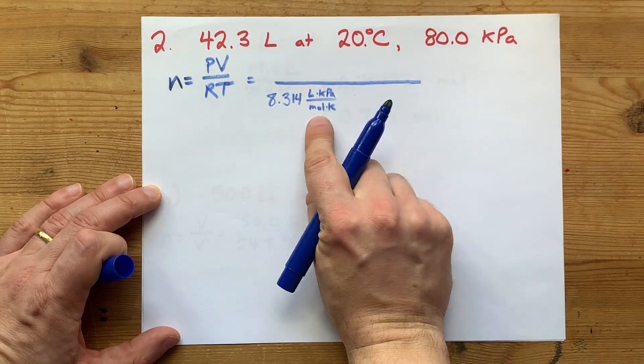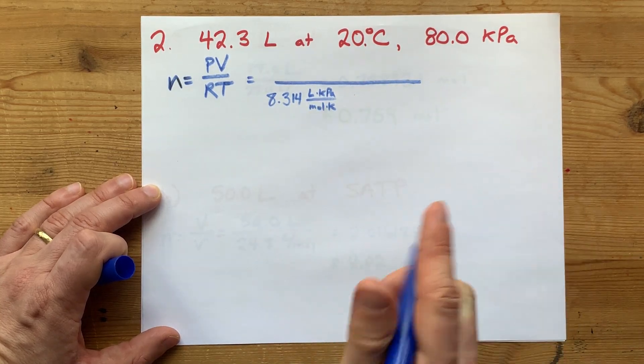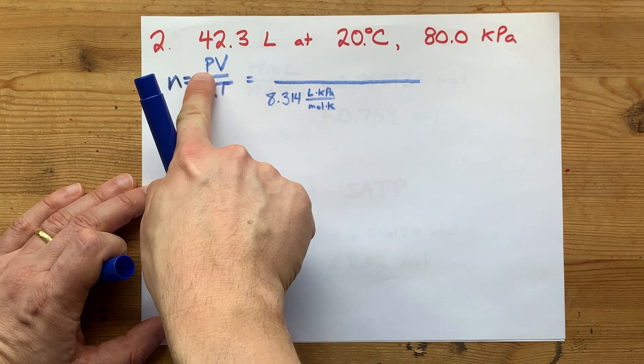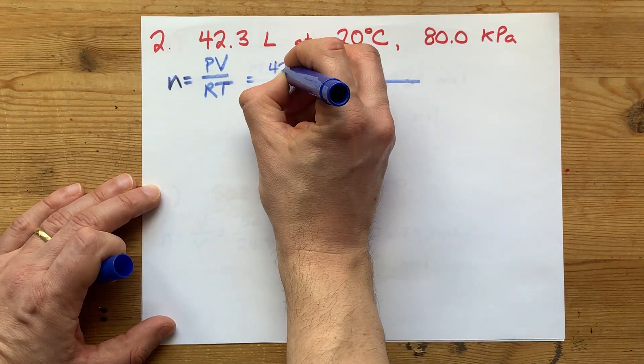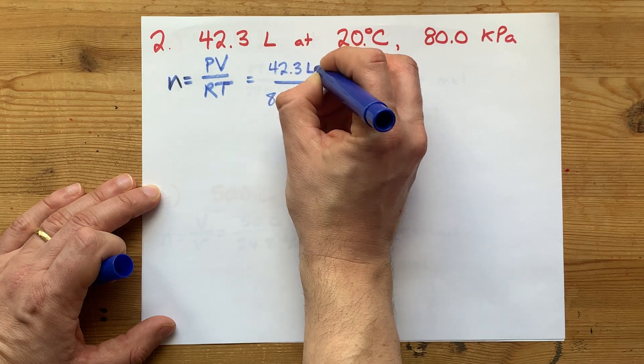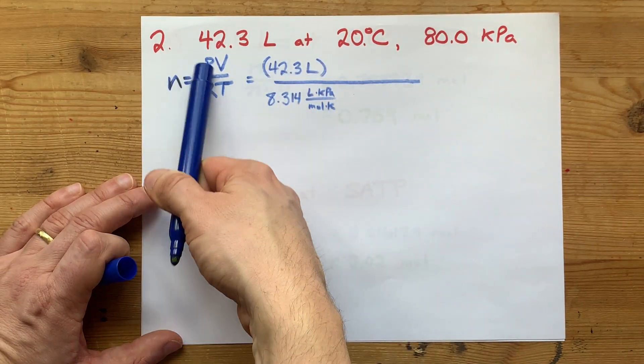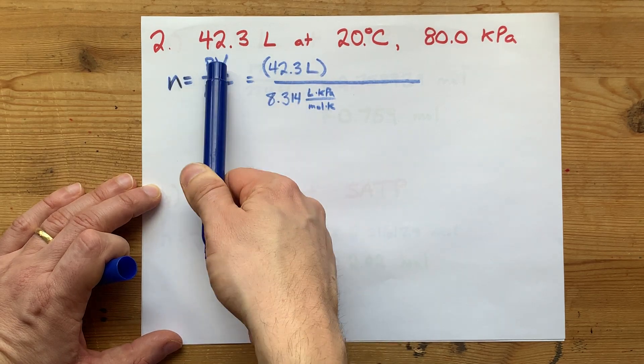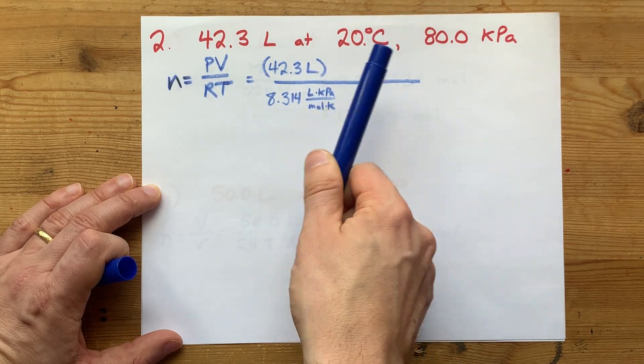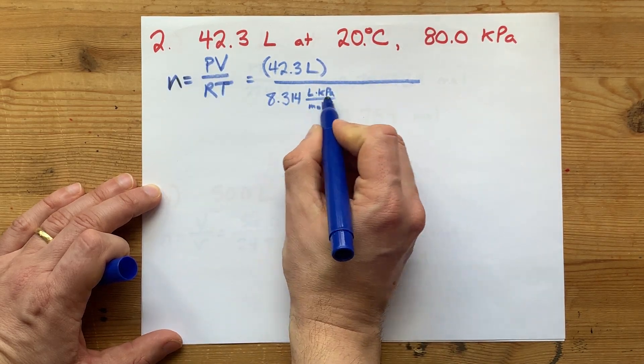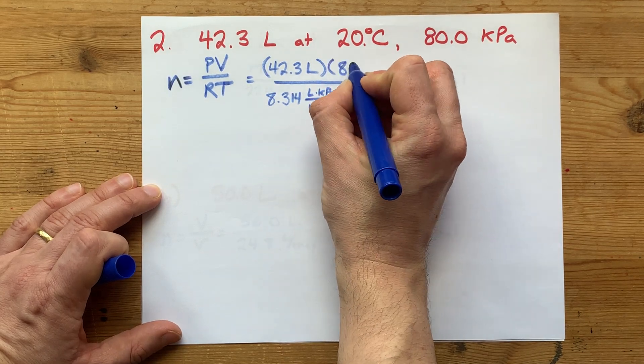This tells you what units you need for everything to cancel out. My V needs to be in liters. It's 42.3 liters, so I can use it as is. My P is in kilopascals. This constant has kilopascals already, so I can just use 80.0 kPa as is.